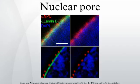Nuclear pores are large protein complexes that cross the nuclear envelope, which is the double membrane surrounding the eukaryotic cell nucleus. There are about an average of 2,000 nuclear pore complexes in the nuclear envelope of a vertebrate cell, but it varies depending on cell type and the stage in the life cycle.